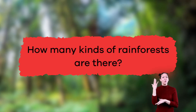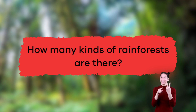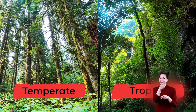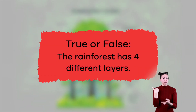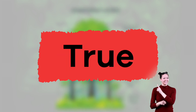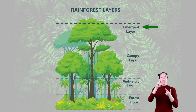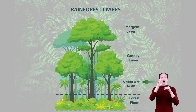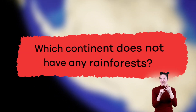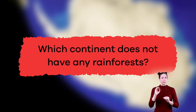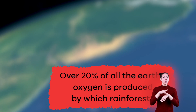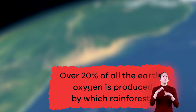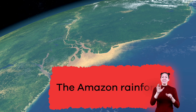Ready to review? How many kinds of rainforests are there? Two — tropical and temperate. True or false: the rainforest has four different layers. True! They are the emergent, canopy, understory, and forest floor. Which continent does not have any rainforests? Antarctica. Over 20% of all the Earth's oxygen is produced by which rainforest? The Amazon rainforest.